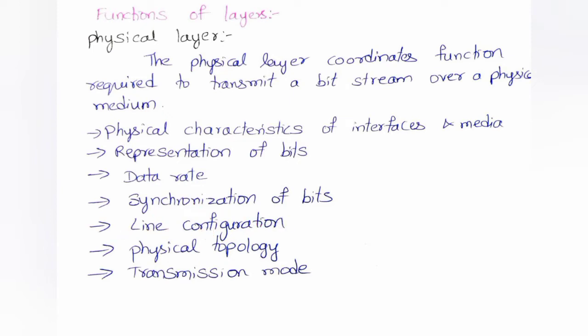Line configuration refers to the connection of devices to the media. There are two types: point-to-point configuration, where two devices communicate through a dedicated link, and multipoint configuration, where a link is shared among several devices. Physical topology defines how devices are connected to make a network. Types of topologies include mesh, star, bus, tree, and hybrid topology. For more on topologies, watch my previous videos.